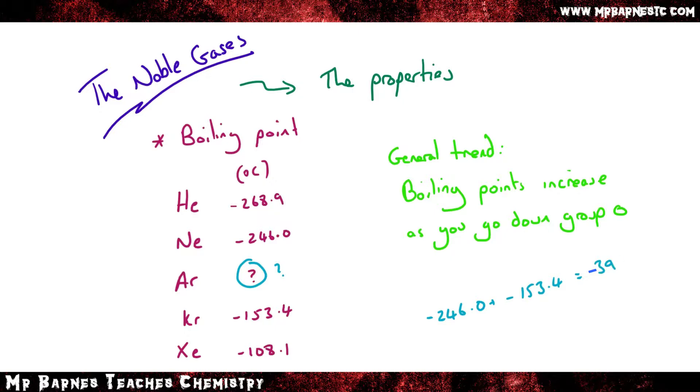So if you add those both together which gives you minus 399.4, divide that by two and it gives you minus 199.7. The actual boiling point for argon is minus 185.8 so again pretty close.